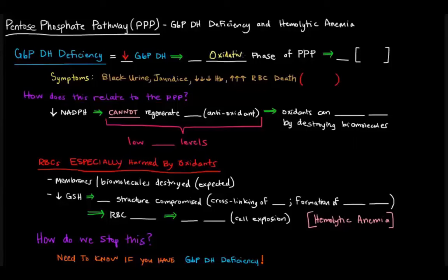This, of course, is the enzyme that's involved in the oxidative phase of the pentose phosphate pathway. So if we have low levels, we have a deficiency of this enzyme.